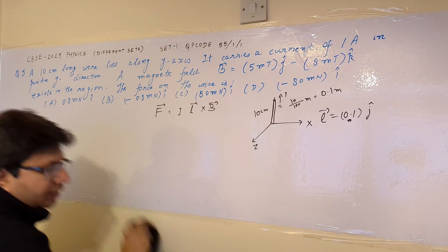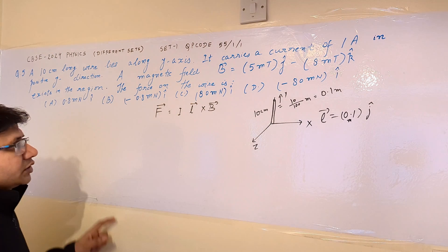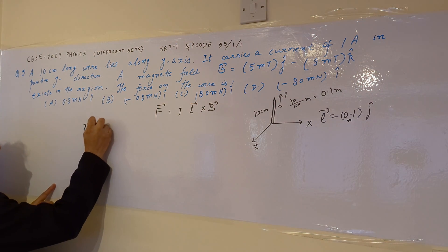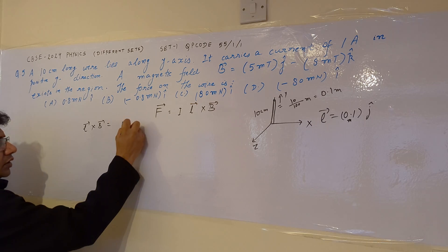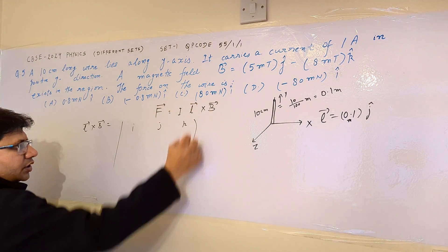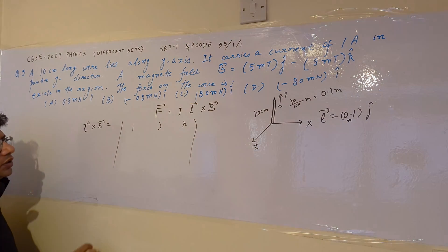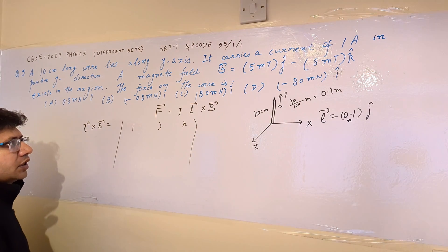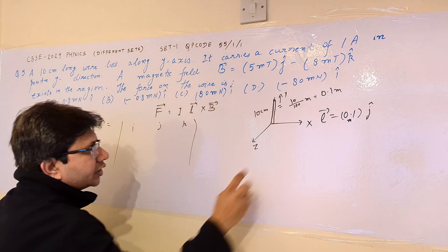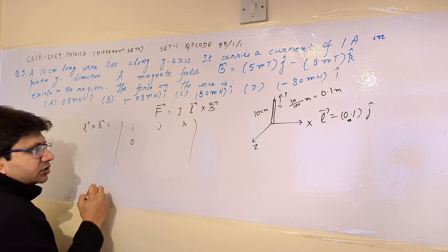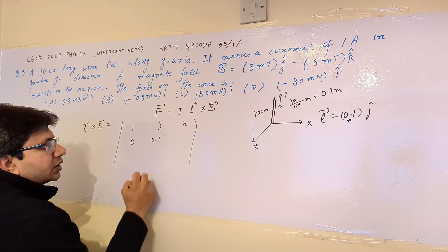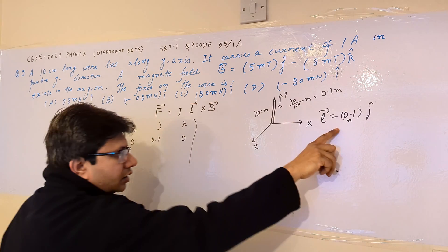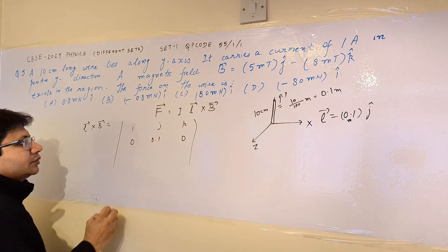Now let us apply this particular method to solve this. L cross B. First of all, we have to calculate L cross B. So to calculate L cross B, we have I J K in the first row, then in the second row we have the coefficient of L. The coefficient of L, we have only the J component present. So that is why this is 0, this is 0.1, and then the K component is missing in L, so it is also 0.